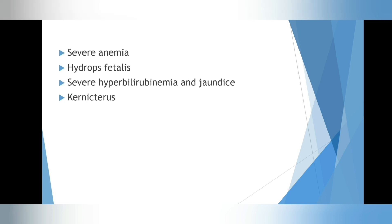Number one: severe anemia. Severe anemia occurs when the mother's antibodies attack the baby's red blood cells, so they are broken down and destroyed — that's hemolysis taking place. This means the baby becomes anemic, and being anemic means the baby does not have enough mature red blood cells. Anemia is dangerous because it limits the ability of the blood to carry oxygen to the baby's organs and tissues.